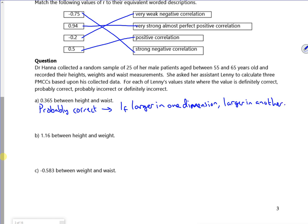We've got 1.16 as a PMCC, so that's definitely wrong, isn't it? We know that the R-value lies between plus or minus 1.